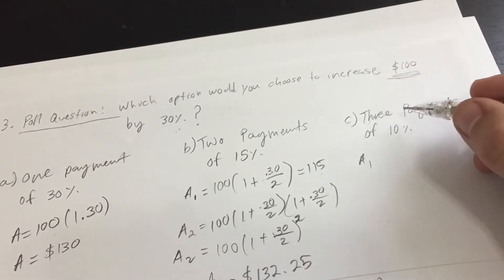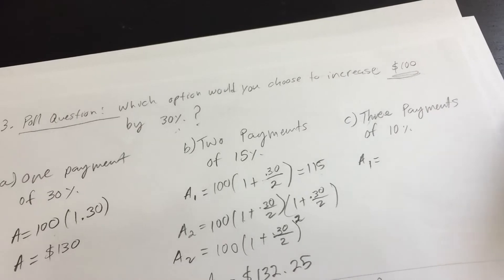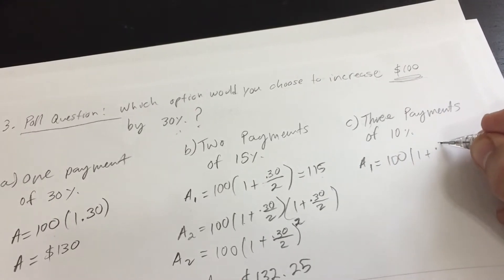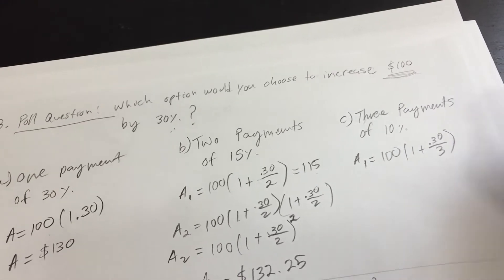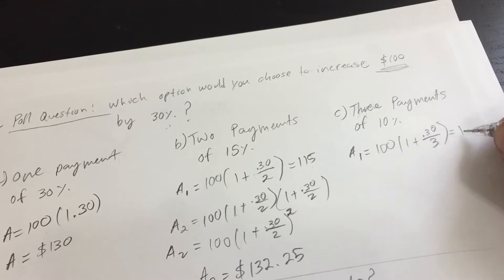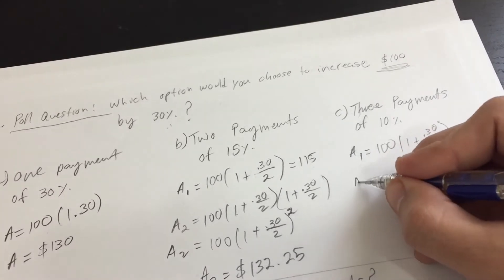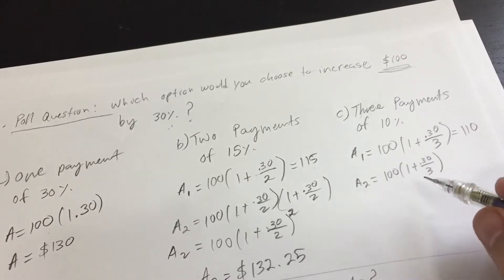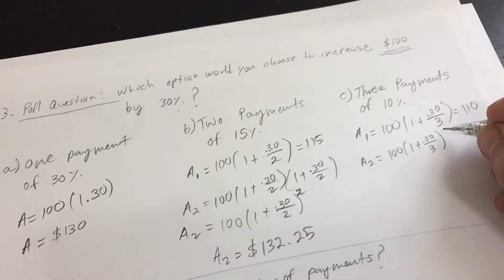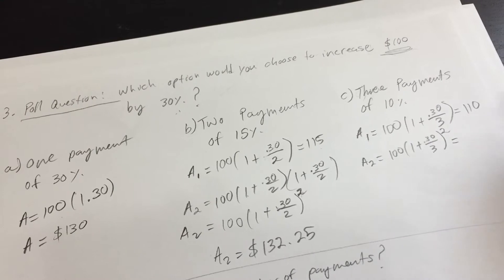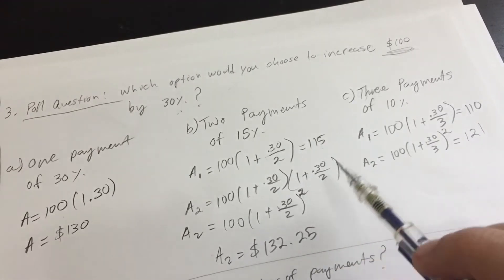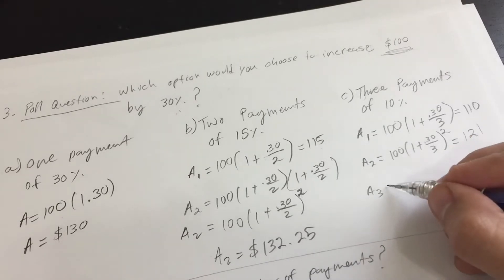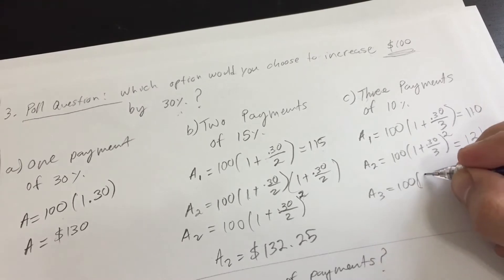For three payments, I'll call it A-sub-one for the first payment. Our initial amount is $100, we want 100% back plus 30% now divided into three payments — that's 10% each — so 100 times 1.10 equals $110 after the first payment. The second amount equals 110 times 1.10, which is 100 times 1.10 squared, giving us $121.